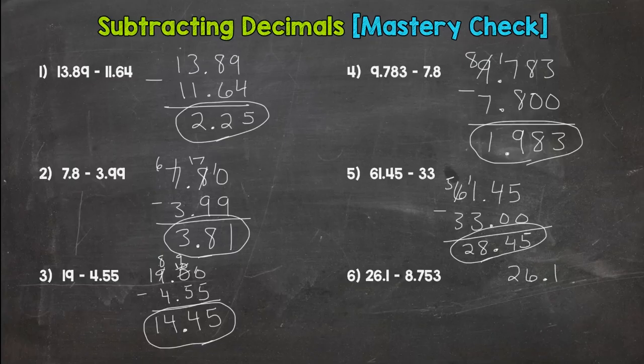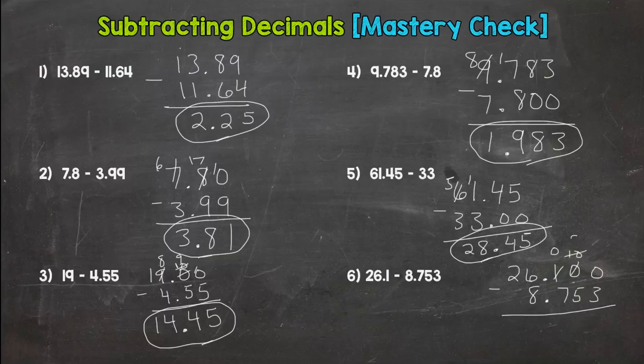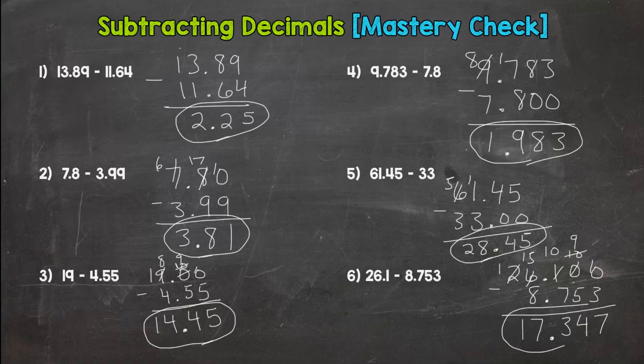Line up our decimals. 10 minus 3 is 7, need to borrow. 10 minus 5 is 5, need to borrow again. 10 minus 7 is 3, decimal straight down. So 17.347 thousandths.